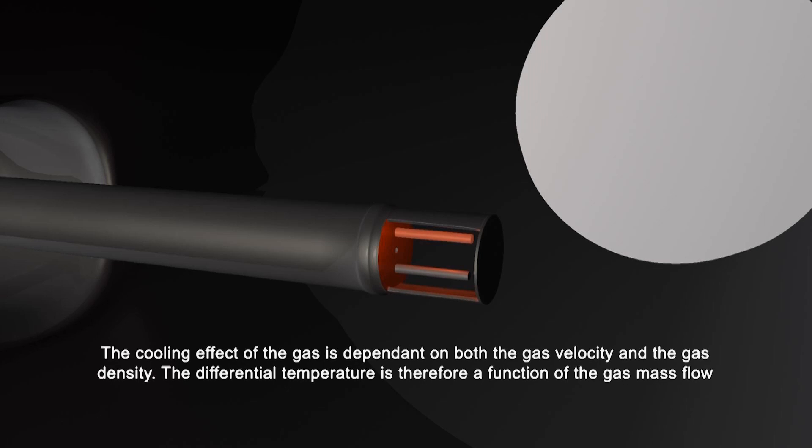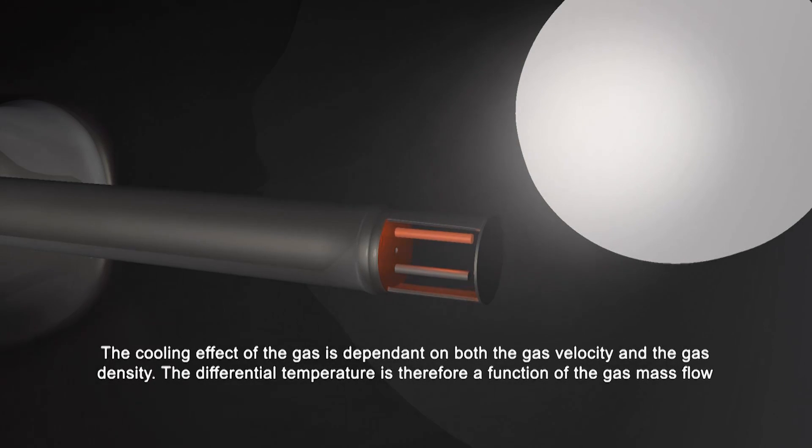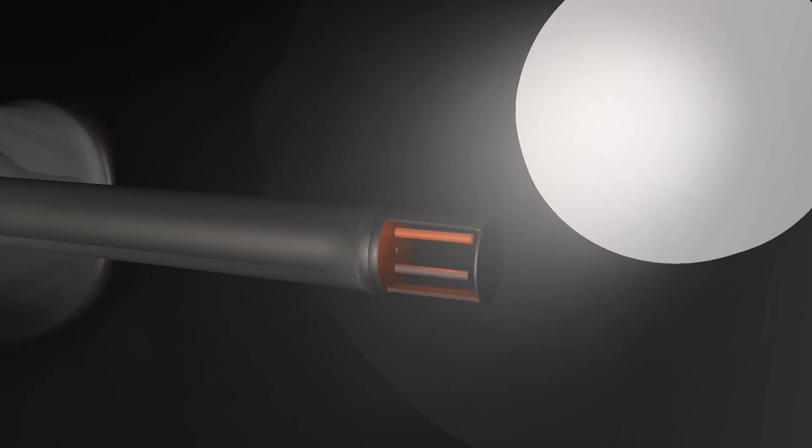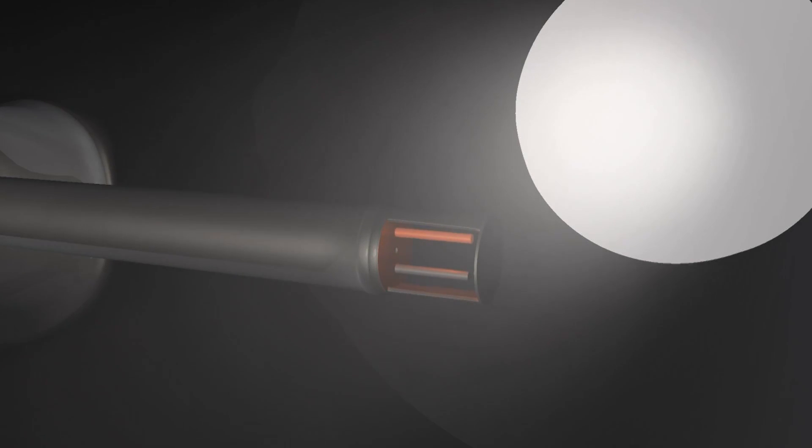The cooling effect of the gas is dependent on both the gas velocity and the gas density. The differential temperature is therefore a function of the gas mass flow. The temperature of the gas is also monitored and used in the mass flow equation.